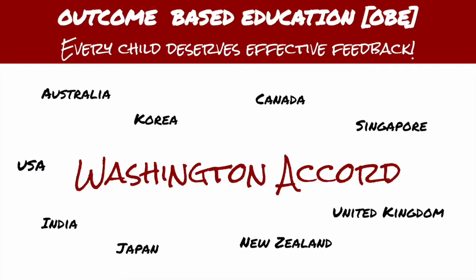Outcome-based education formulates the entire education system around goals or outcomes. The Washington Accord is an international accreditation system based on OBE and has several prominent signatories, including USA, United Kingdom, Singapore, Canada, and India.